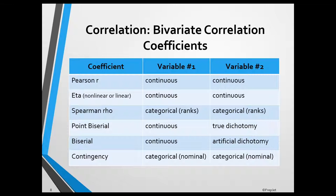The choice of a bivariate correlation coefficient is based on the scales of measurement of the two variables. In the context of correlation, ratio and interval scales are often referred to as continuous, while ordinal and nominal scales are referred to as categorical. Also, when a categorical variable has only two categories, it is referred to as a dichotomy.